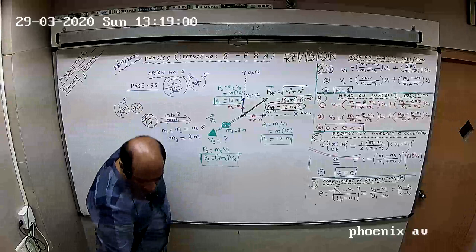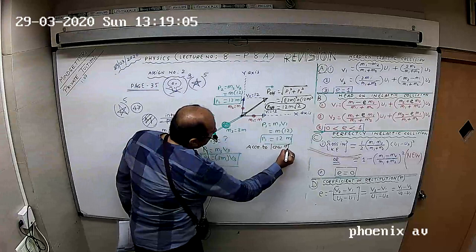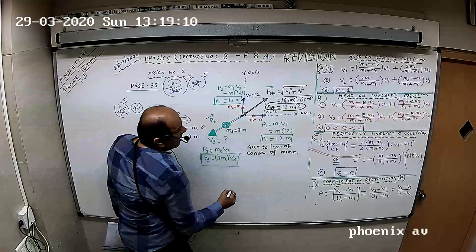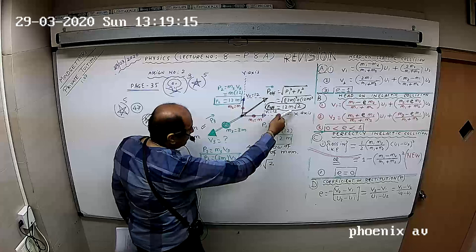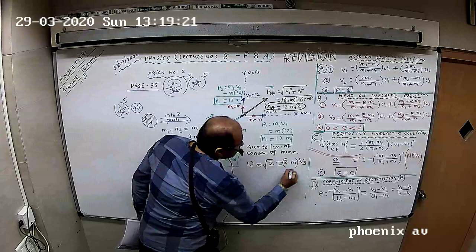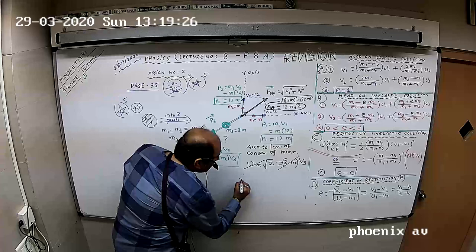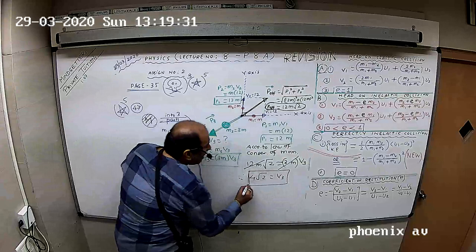According to law of conservation of momentum, can I say 12M root 2 equals 3M into V3. 3M and 12M cancel, that gives me V3 equals 4 root 2.